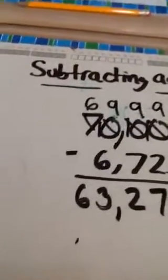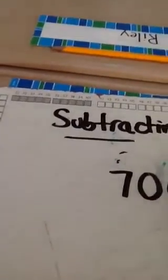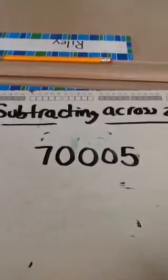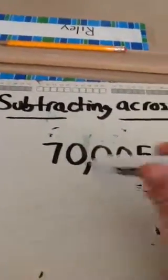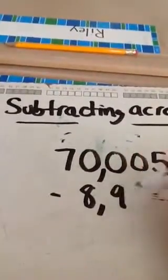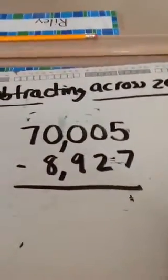The other way we looked at these problems today in class was we also looked at problems where we had to subtract across zeros, but somewhere in the number there was a number where we either had to borrow or didn't have to borrow. I'm going to change my number from 70,000 this time to 70,005, and I'm going to subtract from that 8,927.